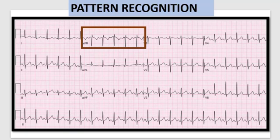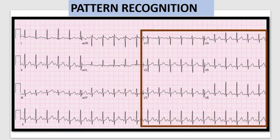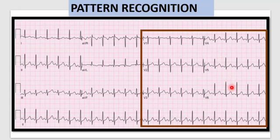There are specific QRS patterns in chest leads V1 to V6. In lead V1, the R wave is very small with a deep S wave. As we progress further along, the height of the R wave increases and the depth of the S wave decreases, to the extent that in leads V5 and V6 there are predominant R waves with very small or absent S waves. It is very important to familiarize yourself with normal ECG patterns so that you are able to recognize any abnormality if present.